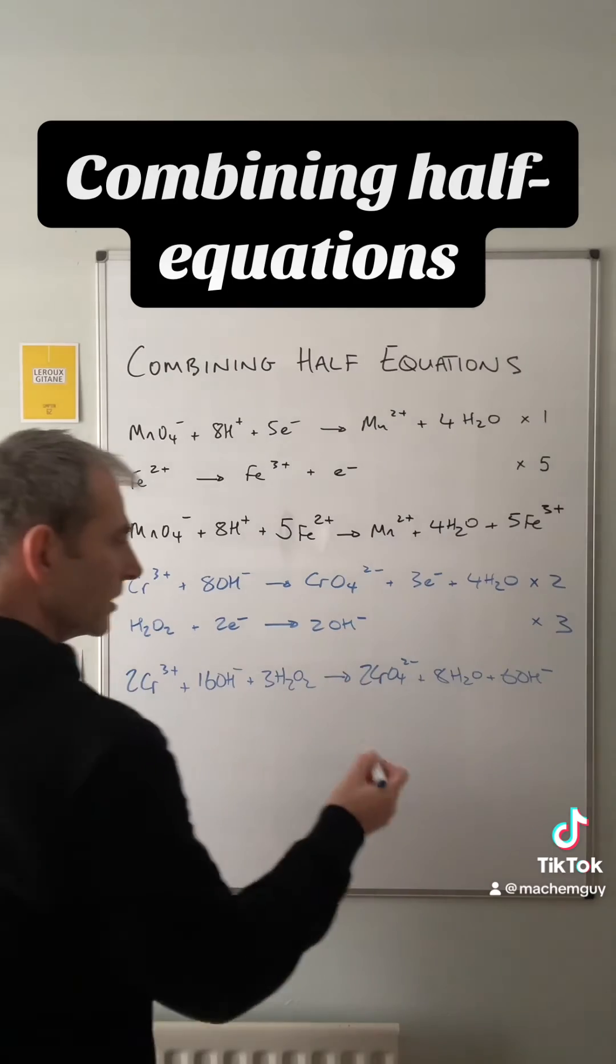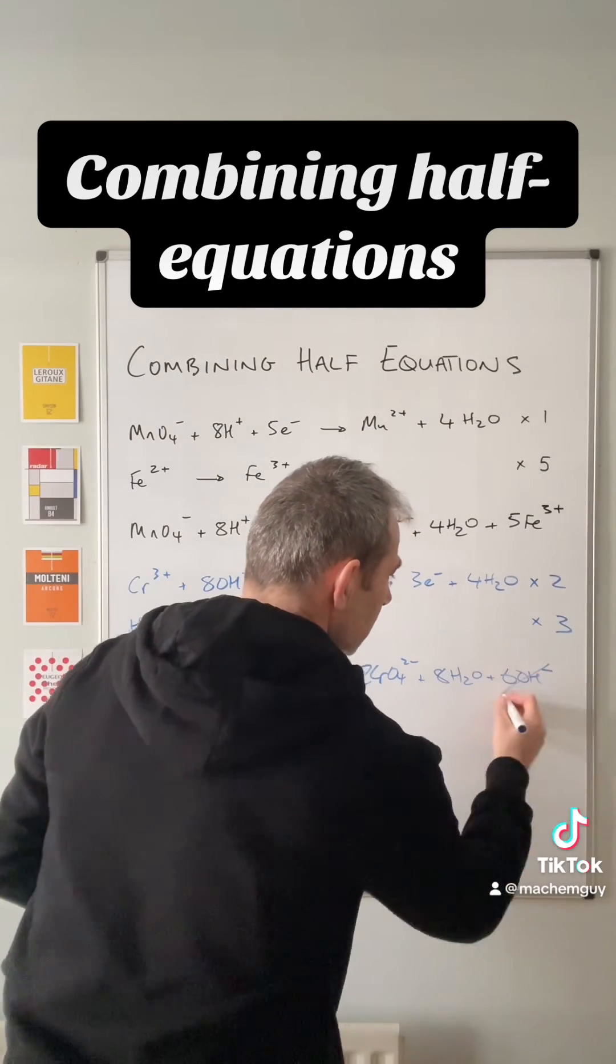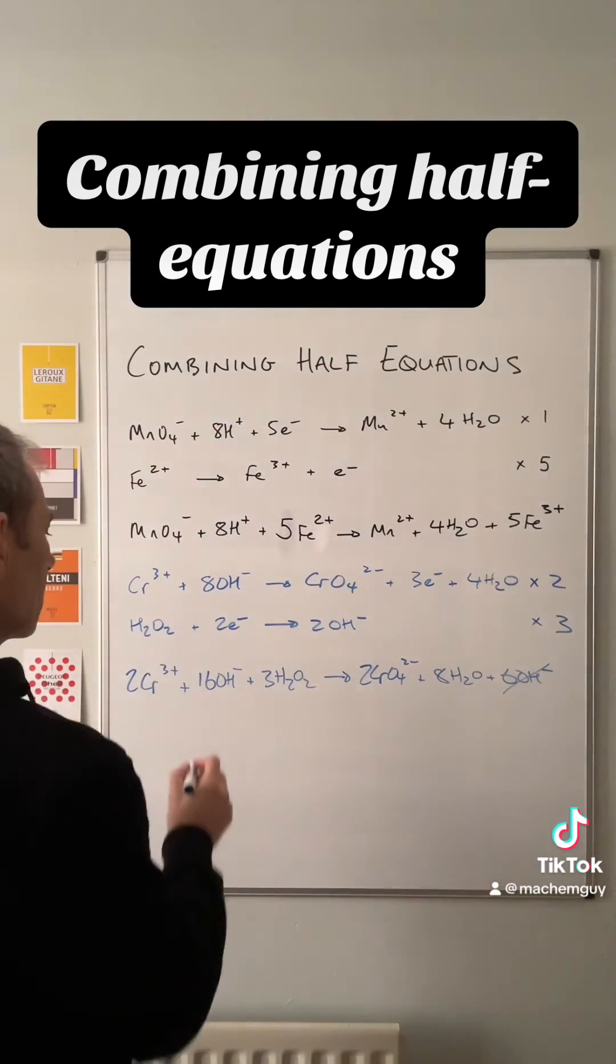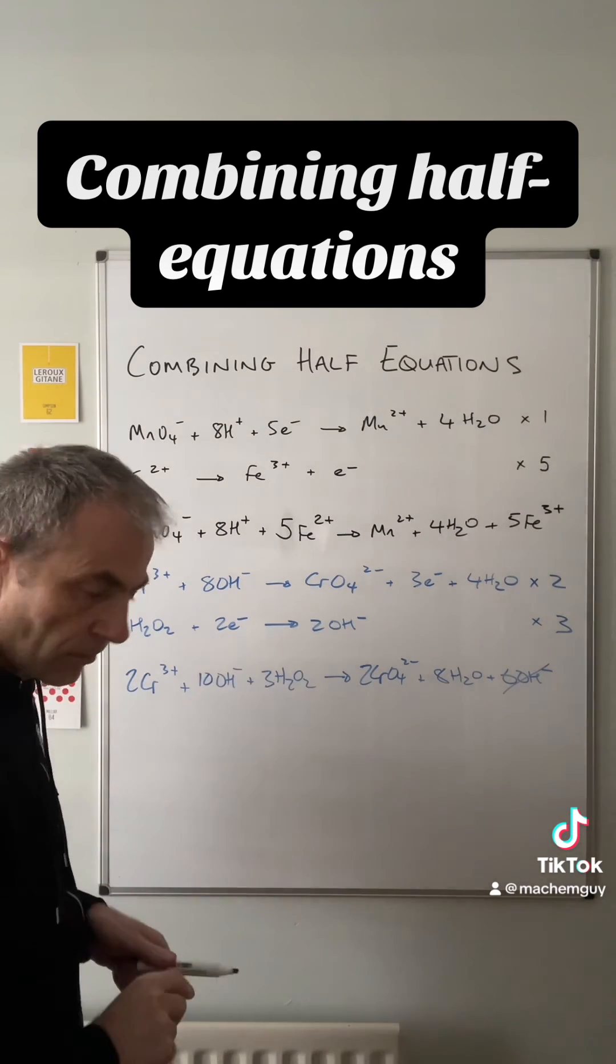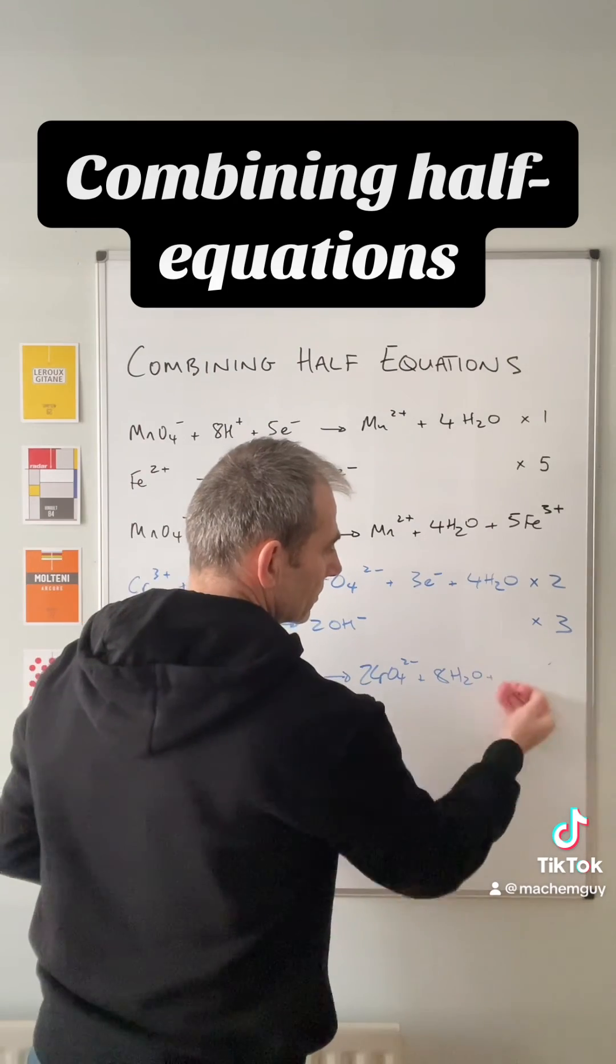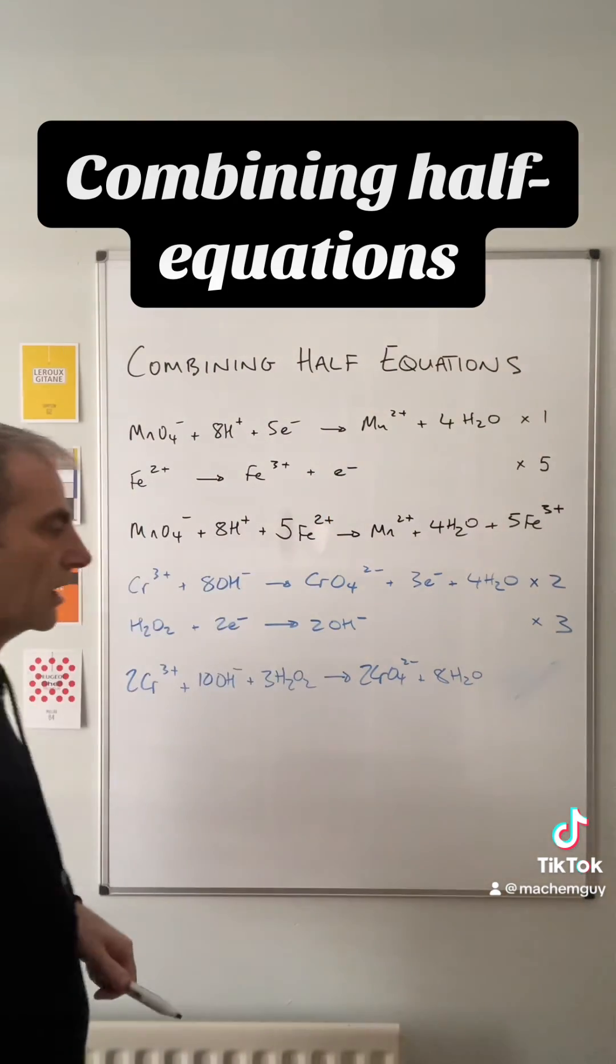So for this one, we're going to lose the six hydroxide ions on the right and we're going to take this down to 10. So the final reaction would look like that.